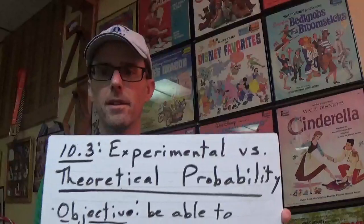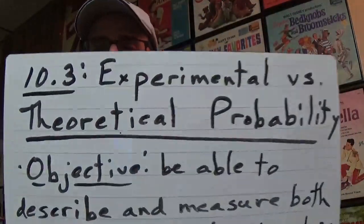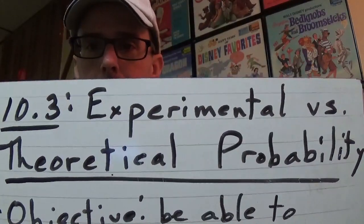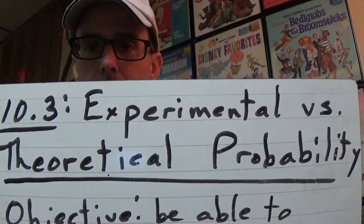I've got the 1998 video camera going here. Good old black coffee - it's about 9:30 in the morning. Black coffee is always a good way to start a day, always a good way to start a math lesson. So here we go, section 10.3: experimental versus theoretical probability.